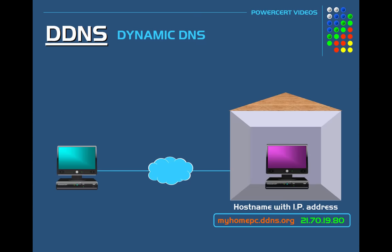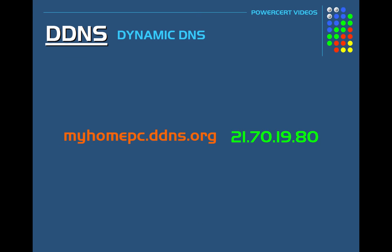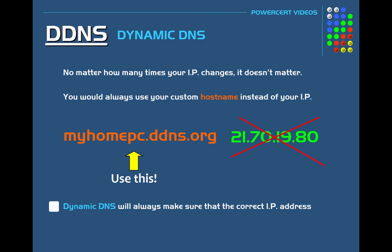For example, let's say you want to access your home computer again. Instead of typing your home's IP address, you would type in the custom hostname you created with Dynamic DNS — so you would type in myhomepc.ddns.org and then you'll be connected. No matter how many times your IP address changes, it doesn't matter. Whenever you want to access a device in your home, you will always use your custom hostname instead of the IP address, and Dynamic DNS will always make sure the correct IP address is mapped to your custom hostname.